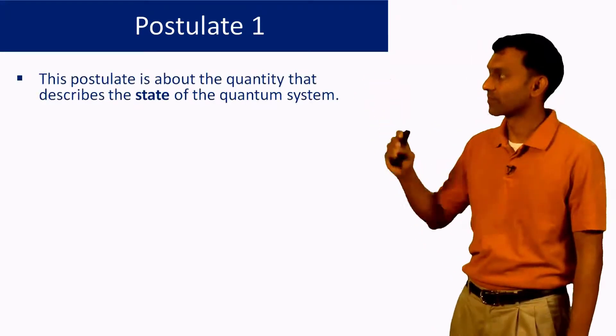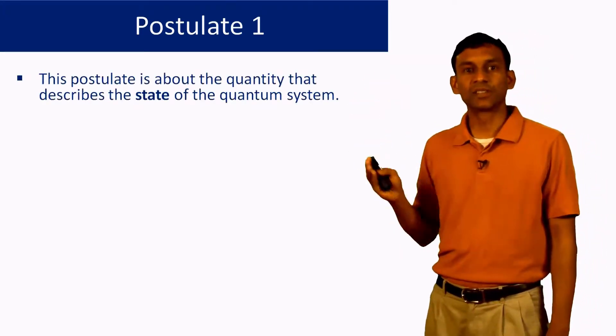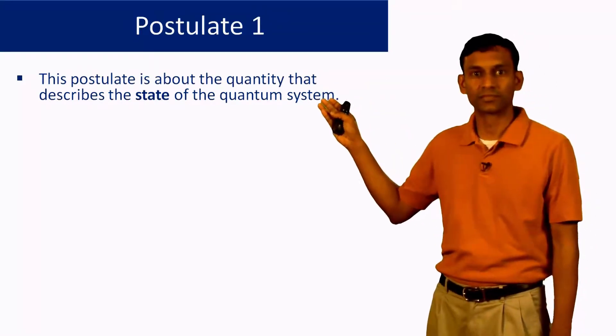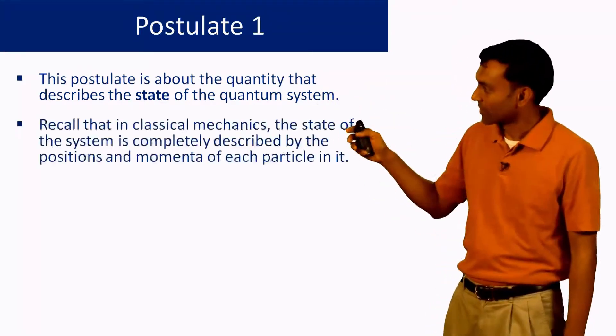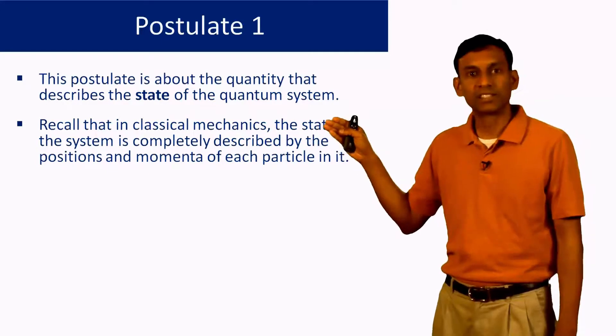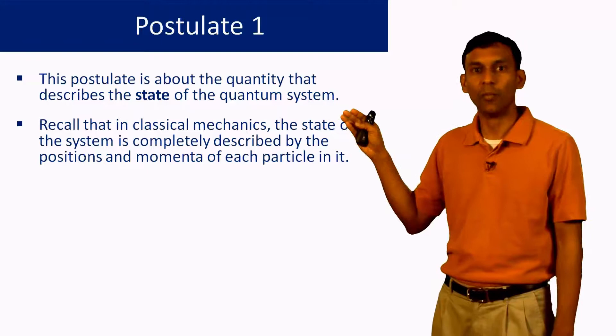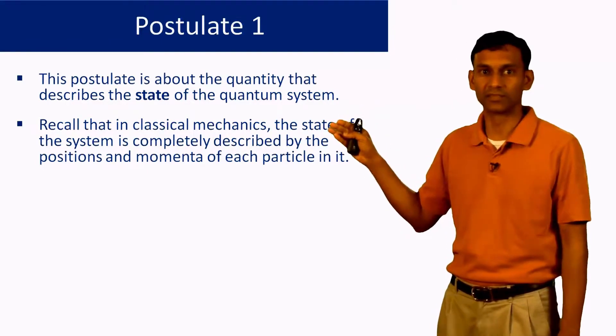So postulate 1: this postulate is about the quantity that describes the state of a quantum system. Recall that in classical mechanics, the state of a system is completely described by the positions and momenta of each particle in the system.